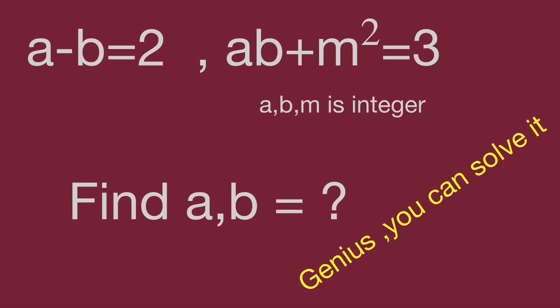Hello, you are watching Bala Hippo math genius riddle. The challenging question is: a minus b equal to 2, and ab plus m squared equal to 3, where a, b, m are integers. Find the value of a and b. Can you find the value of a and b? Pause the video and give yourself a try. When you are ready, keep watching the video to check the result.